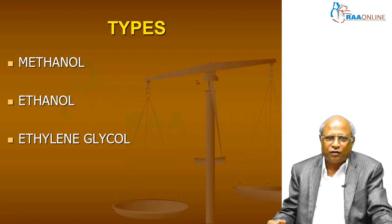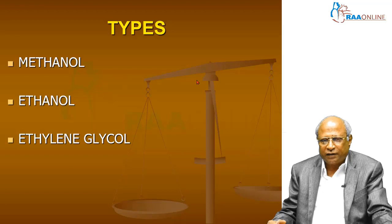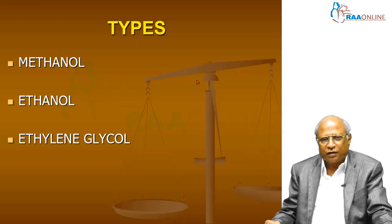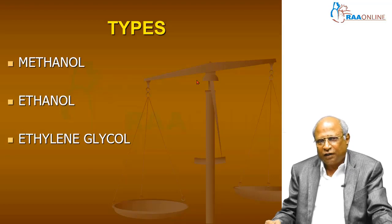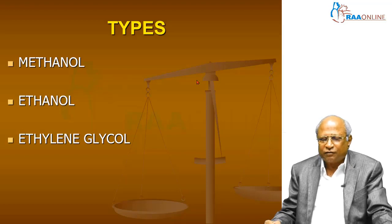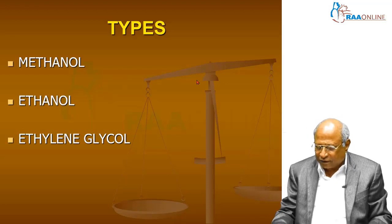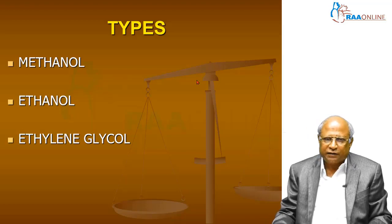The types of alcohol are methanol, ethanol, and ethylene glycol. Methanol is the most dangerous and most toxic, leading to fatal accidents, whereas ethylene glycol is the least toxic among the three.